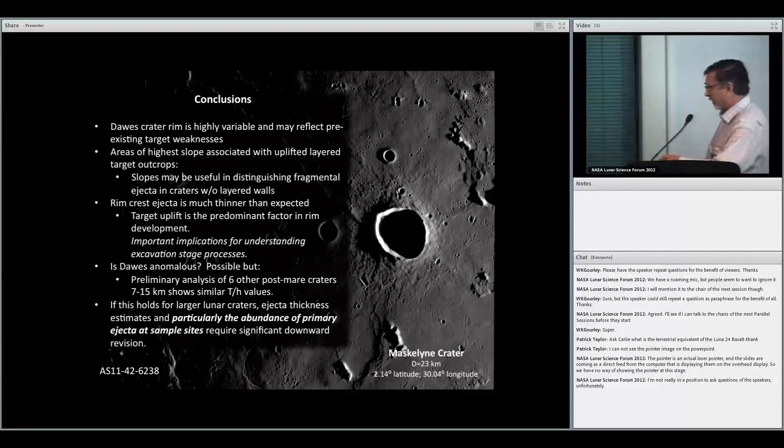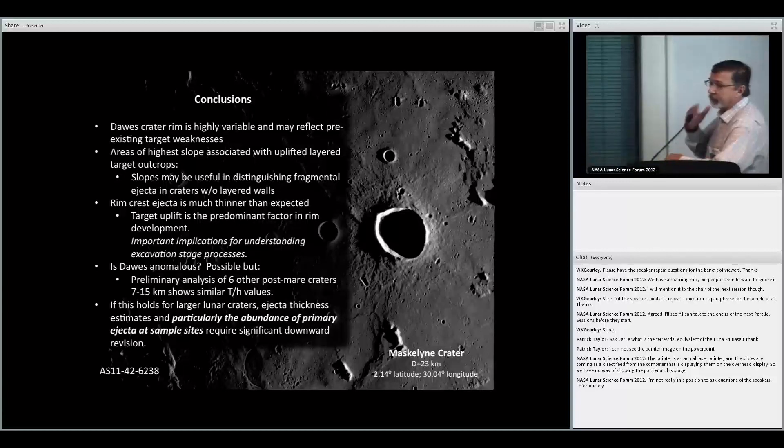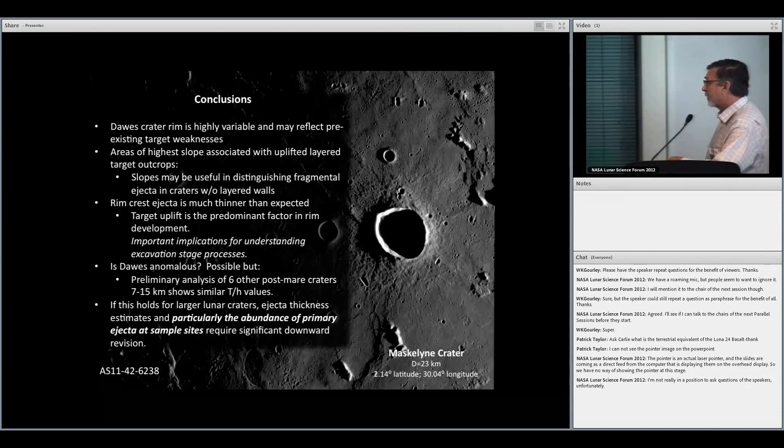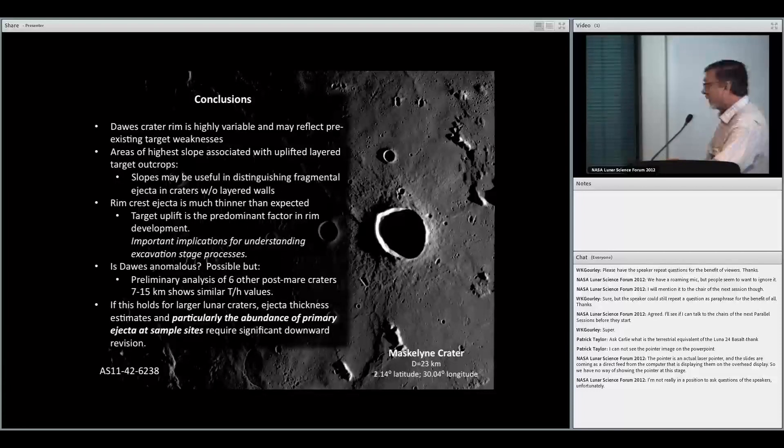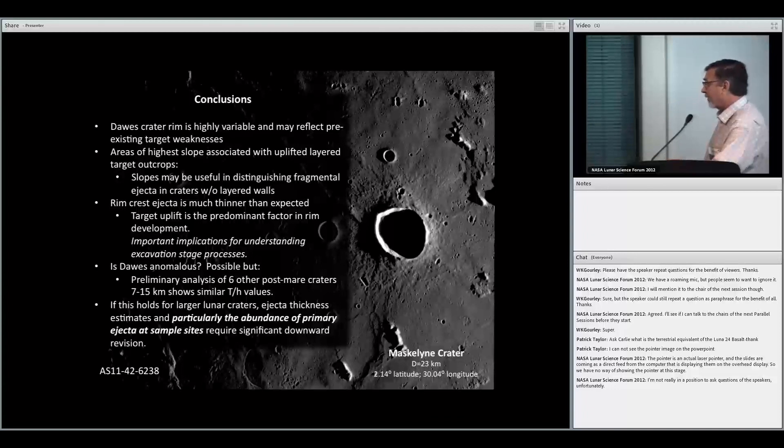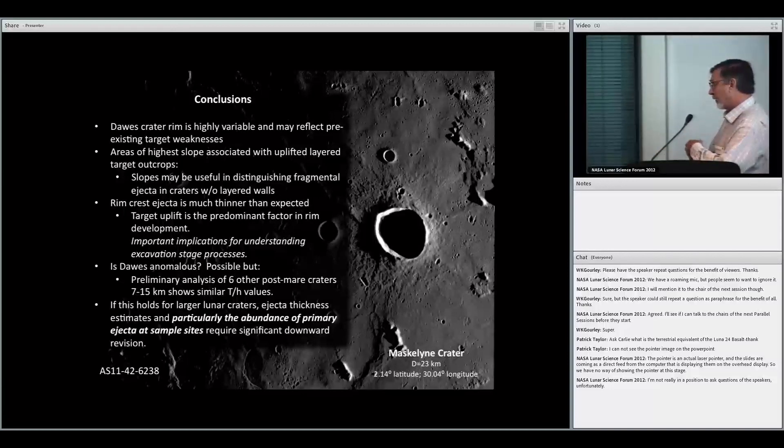It's possible that Dawes is anomalous, but further study that I've been able to do of six other post-mare craters in the range of 7 to 15 kilometers in diameter shows similar thickness measurements as Dawes. So it's beginning to look like lunar craters, lunar simple craters, have much thinner rim crest ejecta deposits than previously expected. If this holds for larger craters, then ejecta thickness estimates and particularly the abundance of primary ejecta at sample sites require significant downward revision.